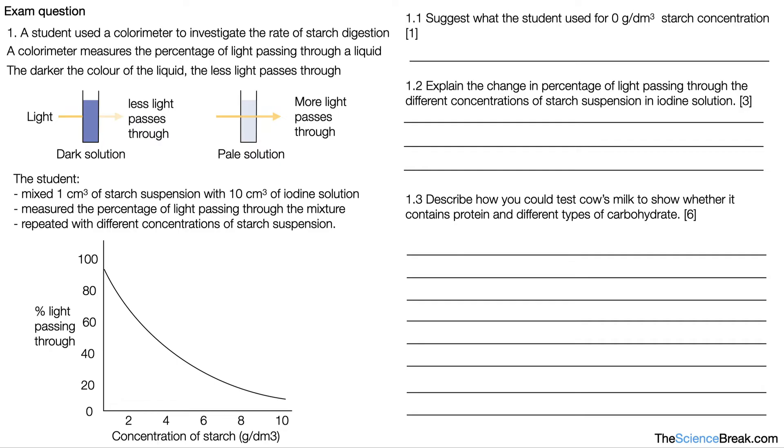So this is quite a tricky question because there's quite a lot of information that we have to read first. This is an application question, so let's go through it. It says a student used a colorimeter to investigate the rate of starch digestion.